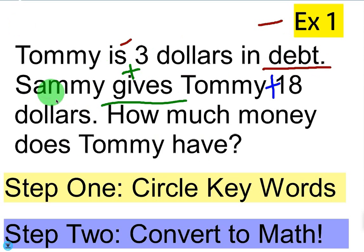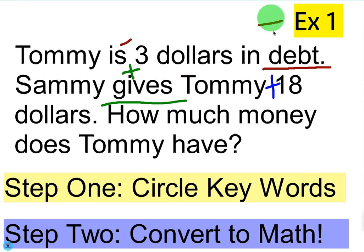Sammy gives Tommy $18. The keyword here is 'give,' so I underlined it and put a plus sign next to 18, because when Tommy is receiving $18, that's plus 18 for him. Debt has a negative connotation, so it's negative. Giving is a positive connotation, so it's positive.